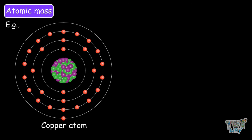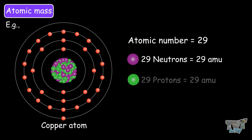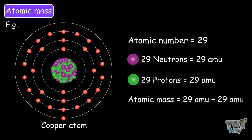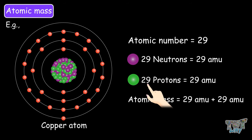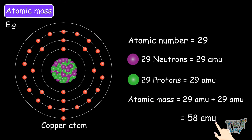Copper: its atomic number is 29, that is, it has 29 neutrons and 29 protons. So its atomic weight will be 29 plus 29, which is 58 amu.